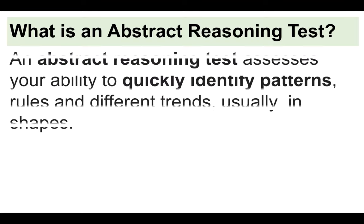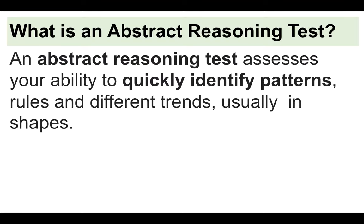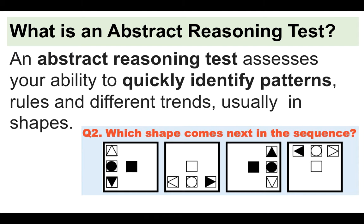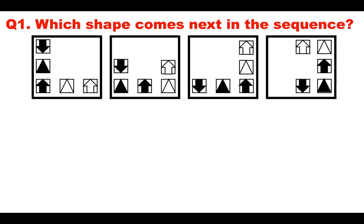The important thing to know from the get-go is what an abstract reasoning test is. An abstract reasoning test assesses your ability to quickly identify patterns, rules and different trends, usually in shapes. So we will be presented with a series of shapes, and we have to decide which shape comes next in the sequence. There are different types of abstract reasoning test, and I will work through all of them within this tutorial. But this forms the basis of an abstract reasoning test question. So let's take a look at one, work through it together in slow pace, so you understand exactly what you need to do.